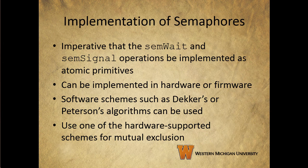The biggest concern when implementing semaphores is that semWait and semSignal must be implemented as atomic primitives — the operation has to appear to the rest of the system to occur instantaneously. We can't have semWait and semSignal take multiple instructions to accomplish, because we'd have to worry about race conditions and multiple processes stepping on each other. This can be implemented in hardware or firmware, or we can use software schemes such as Dekker's or Peterson's algorithms, although those incur some overhead. Another option is to use a hardware-supported scheme for mutual exclusion. That does it for semaphores — in our next video, we'll take a look at chapter five, section four on monitors.